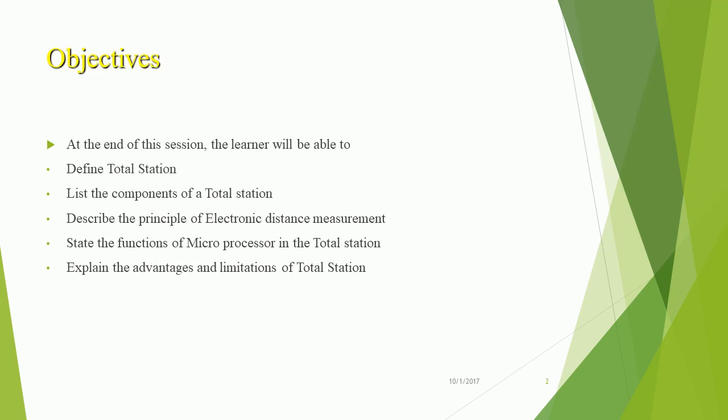Objectives: At the end of the session, the learner will be able to define total station, list the components of a total station, describe the principle of electronic distance measurement, state the functions of the microprocessor in the total station, and explain the advantages and limitations of total station.